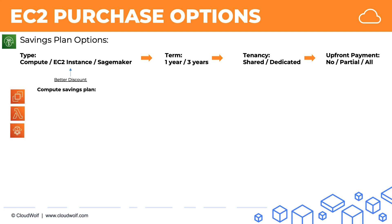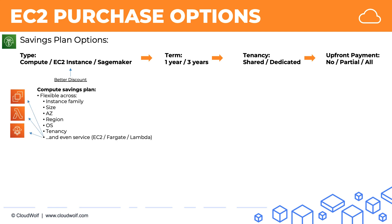The first type is the compute savings plan. Here, you can split your hourly commitment across many things — it's the most flexible. It's flexible across instance family, size, availability zone, region, operating system, tenancy, and even service. So you can split those committed dollars per hour — whether it's $2, $200, or $20,000 per hour — between different services. That's very flexible, especially for organizations switching from EC2 instance computing to Lambda computing, for example.